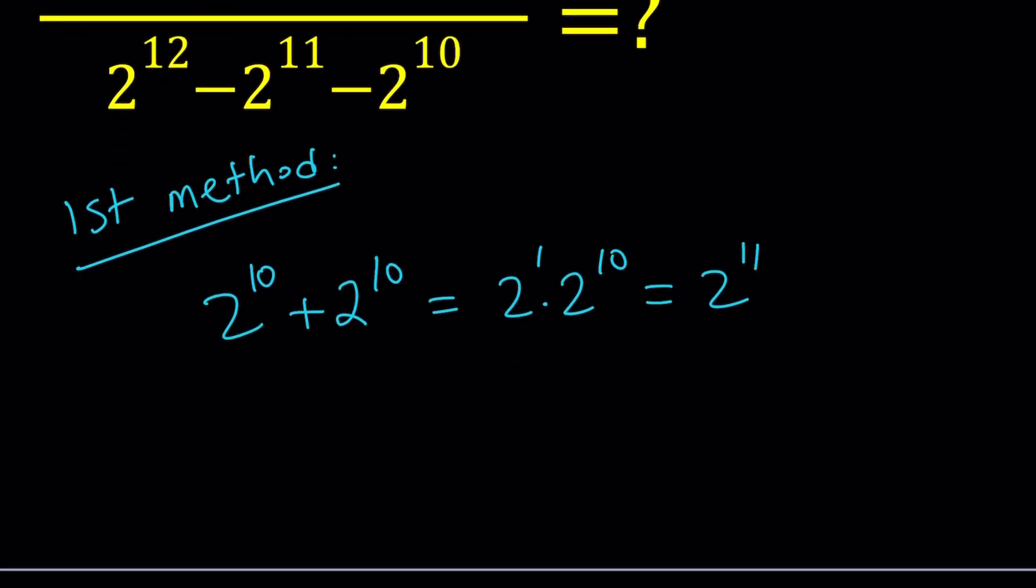If I subtract the two consecutive powers like this, go ahead and subtract 2 to the 10th from both sides, you should be getting 2 to the 10th again. This is kind of like 2x and this is like x, right, if x is 2 to the 10th power. By the way, it's 1024, but we don't care about that. So it's like taking away one of the x's from 2x. Makes sense? So that's one of the approaches that we can use here to simplify this.